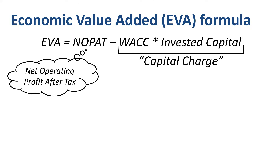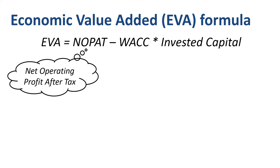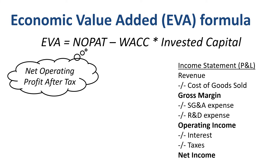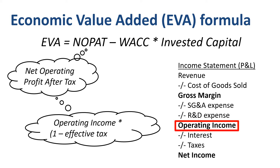To calculate NOPAT, we need to start from accounting profit in the income statement. The starting point is operating income, sometimes called EBIT. NOPAT equals operating income times 1 minus the effective tax rate. NOPAT measures the after-tax return generated for debt and equity holders combined, so it's broader than net income, which just measures the returns for the shareholders.